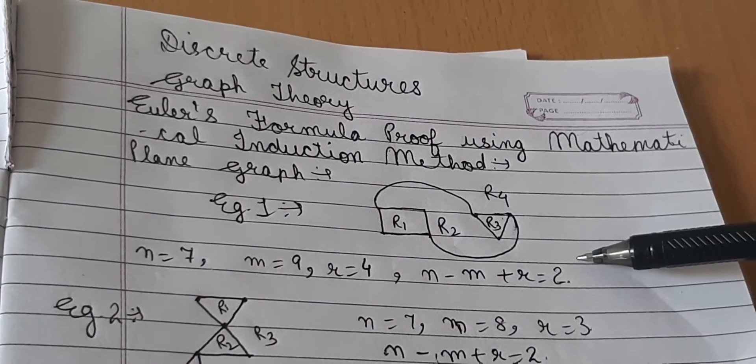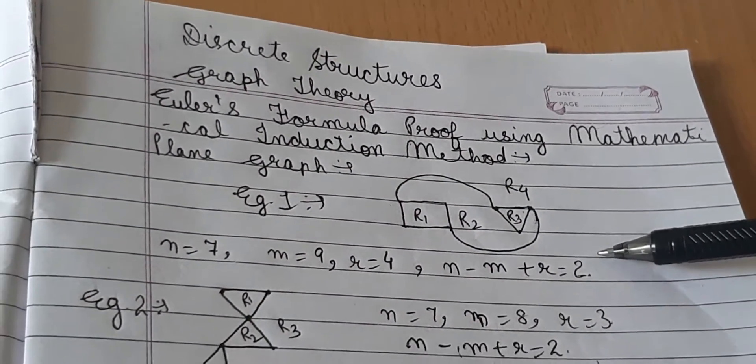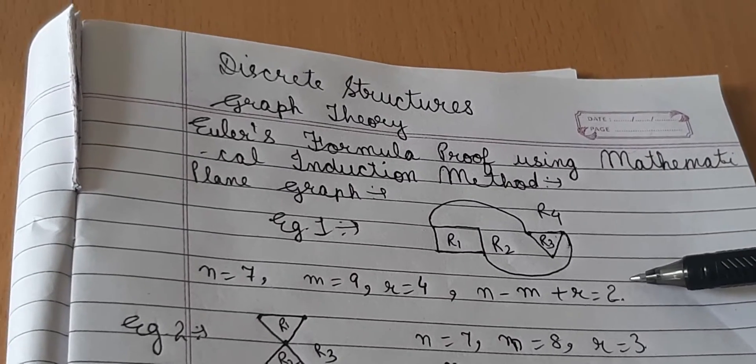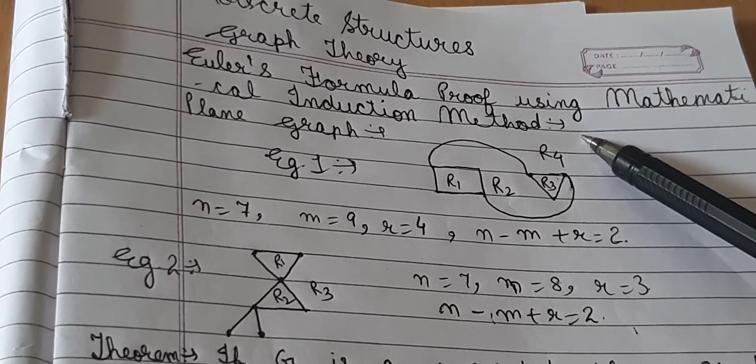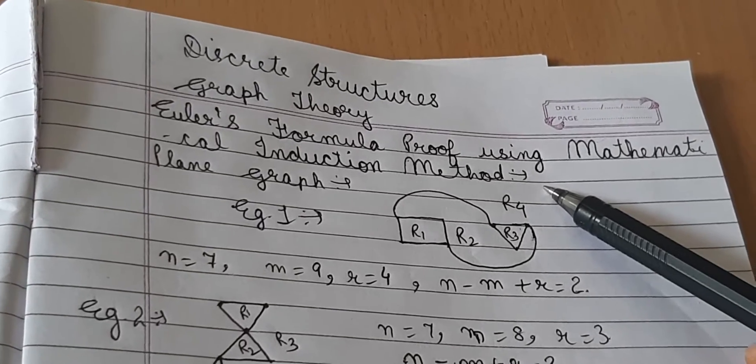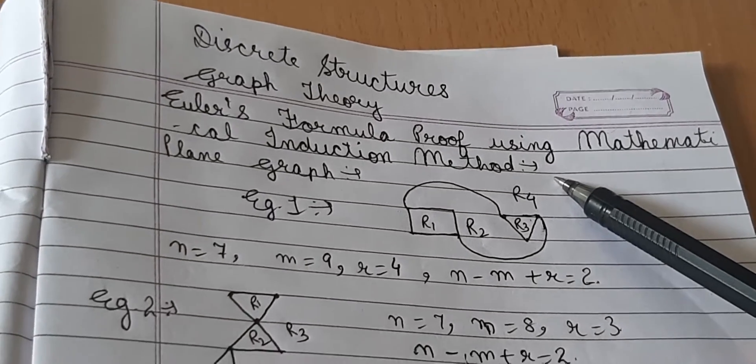So here we have an example of a plane graph. We have also marked its regions as R1, R2, R3 and R4. Next we want to take a look at how many vertices and edges these regions will have.